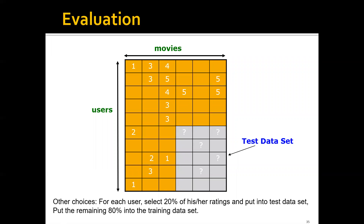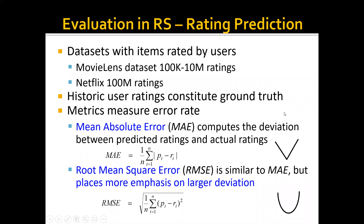Another choice for splitting training and test sets is to select 20% of each user's ratings for the test dataset and put the remaining 80% into the training dataset. There are many public datasets available to evaluate recommender systems, such as MovieLens, which has different versions ranging from 100k ratings to 10 million ratings, and the Netflix dataset with 100 million ratings. All historical user ratings constitute the ground truth.